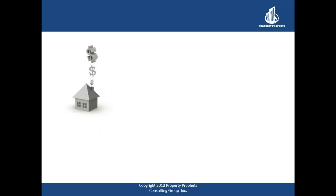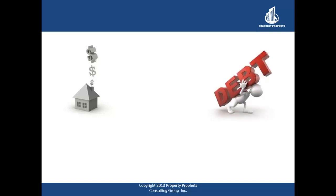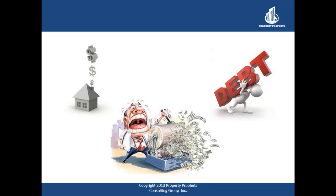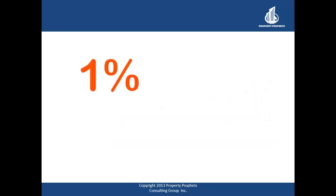The debt coverage ratio determines whether the individual property or the overall portfolio generates enough income to cover annual debt. Lenders want the property or portfolio to generate enough income to cover all the expenses so the individual investor doesn't have to rely on their own money to cover any shortfall. A debt coverage ratio of 1 means that you have a balanced portfolio.